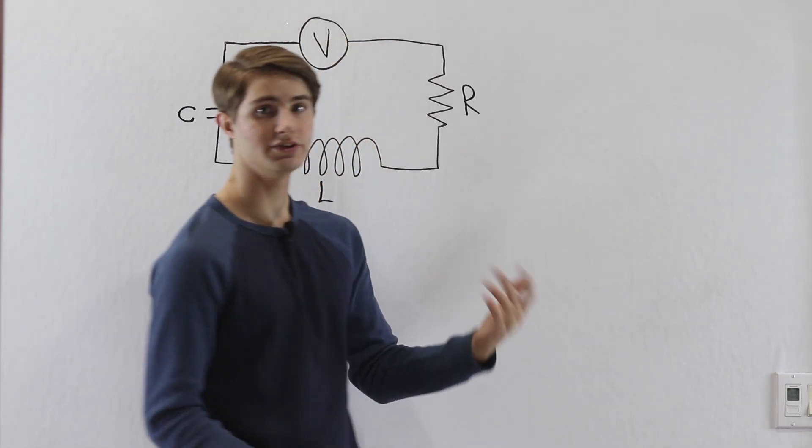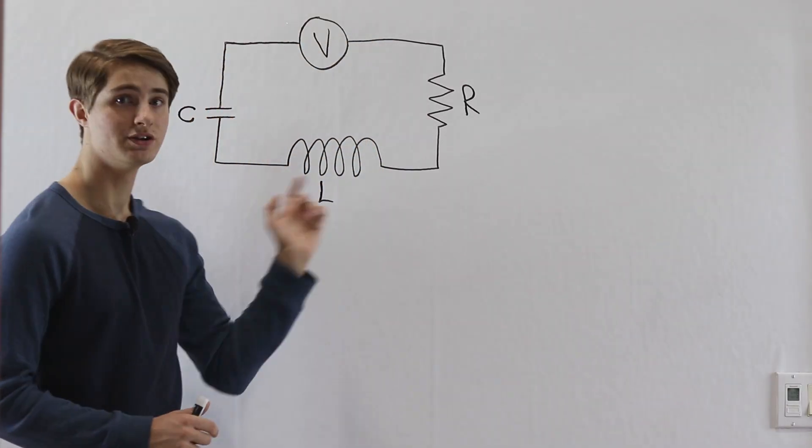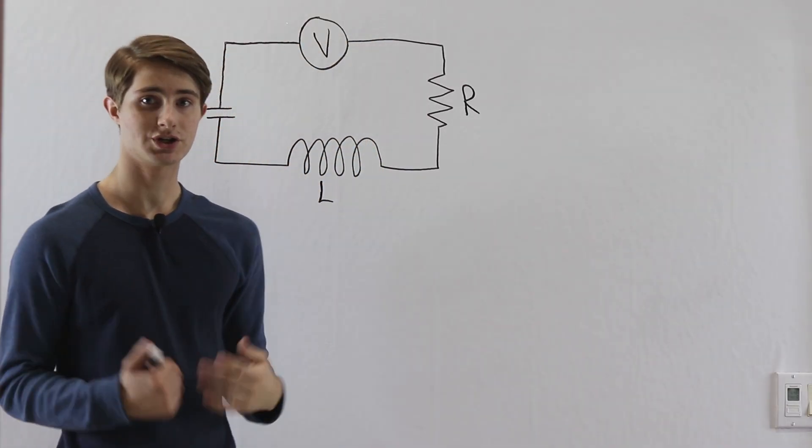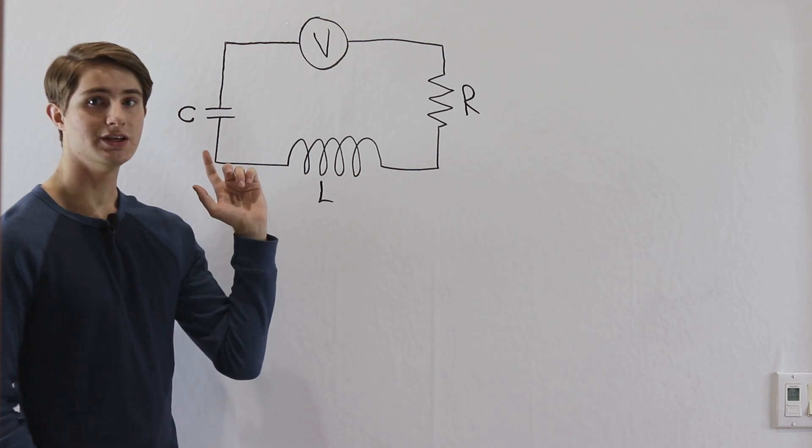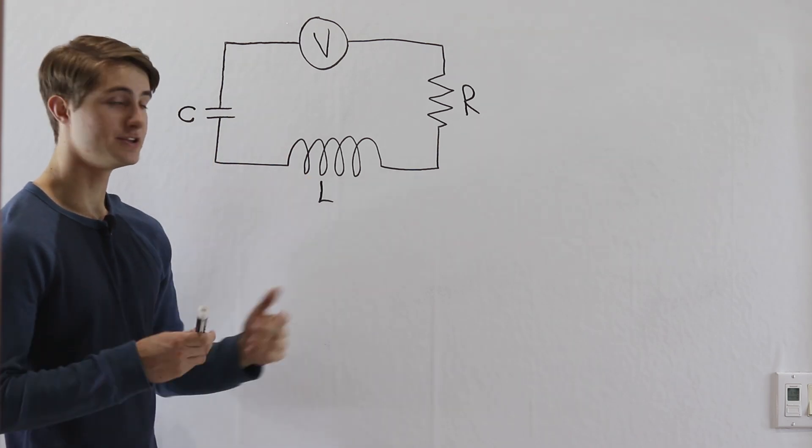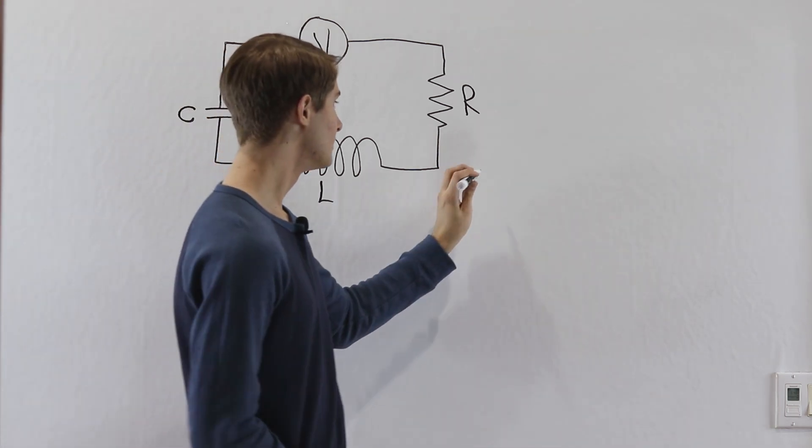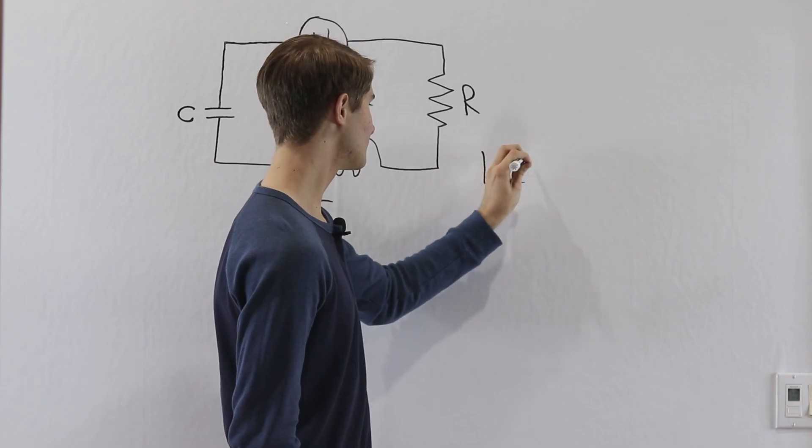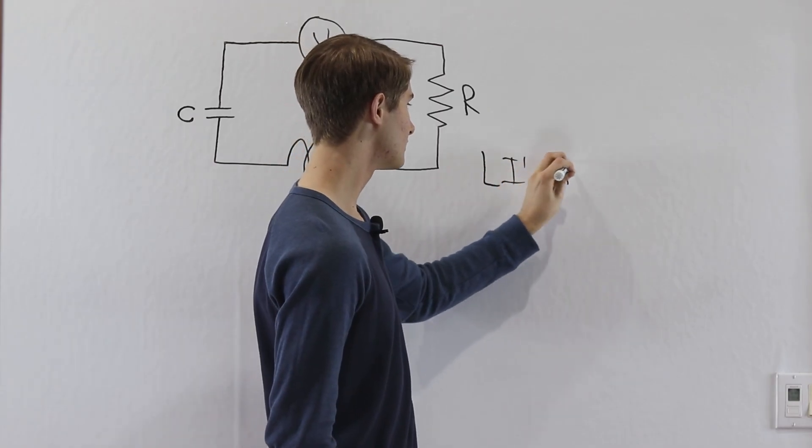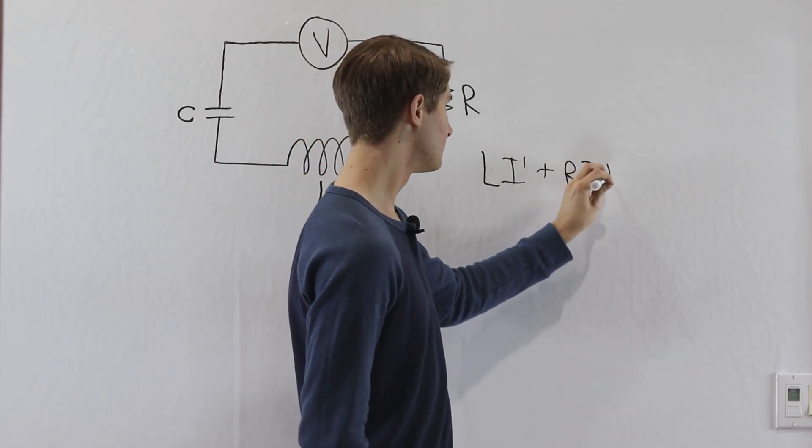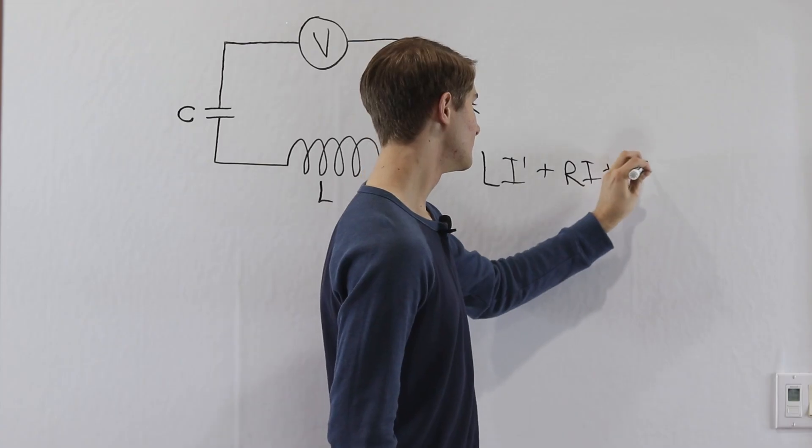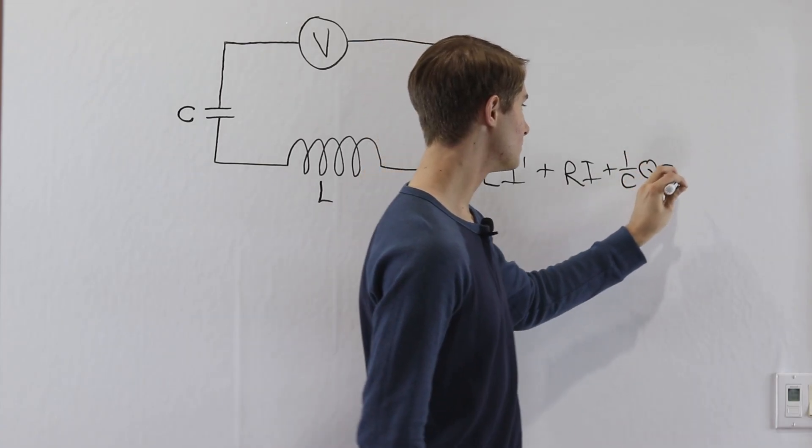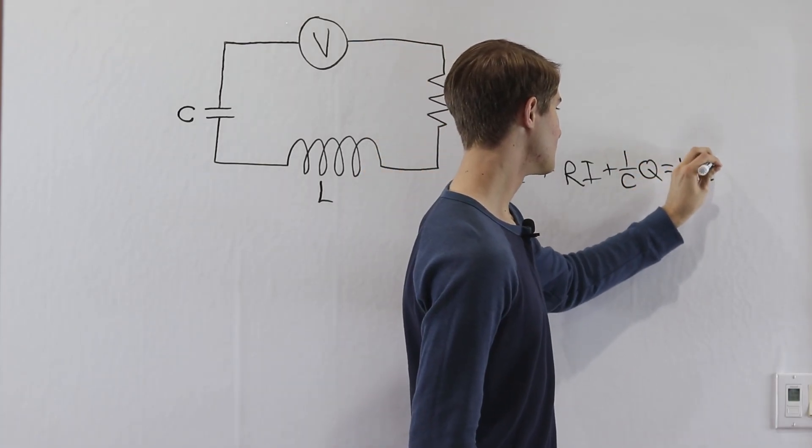I'm not going to go through all the physics and electrical engineering stuff to derive this, but by Kirchhoff's laws we can actually see that this is described by a particular differential equation, which is L times I prime plus R times I plus 1 over C times Q equals the voltage function of T.